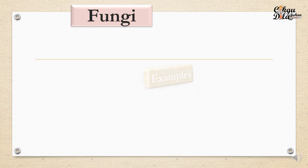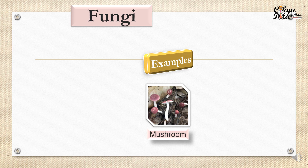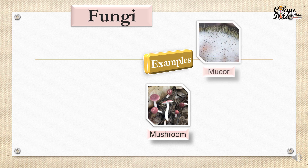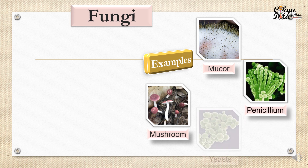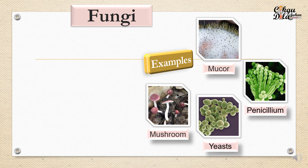Let's identify the types of microorganism. Here are some examples. Can you guess what kind of microorganism? This is a fungi. Mushroom is a fungi. We have muco, penicillium, and yeast. These are examples of fungi.